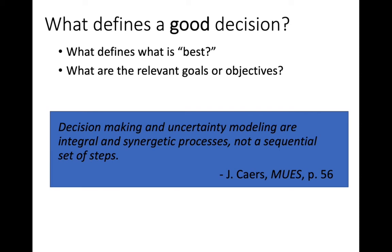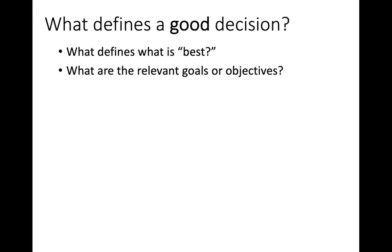You have to iterate a little bit. When you're making a decision, you might need to gather more information, and based on that new information, you might change what your relevant goals or objectives are for the problem. That's going to affect the decision making process and impact the uncertainty modeling part. In reality, this could take several steps and you might have to revisit what your goals and objectives are for the problem.